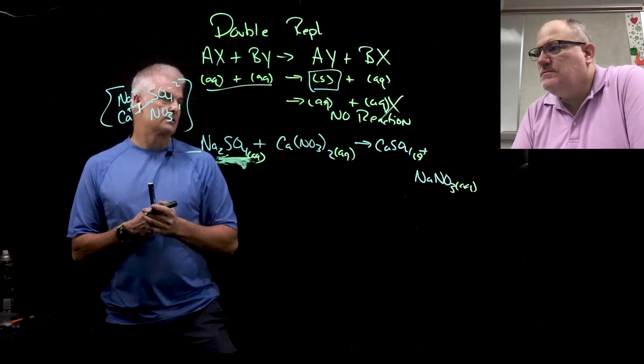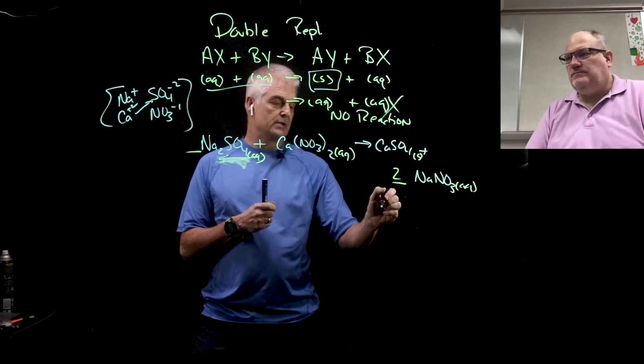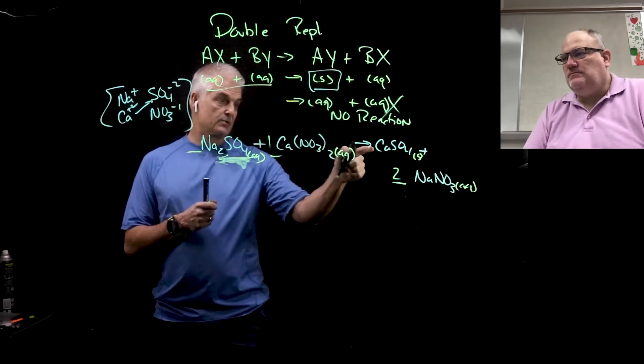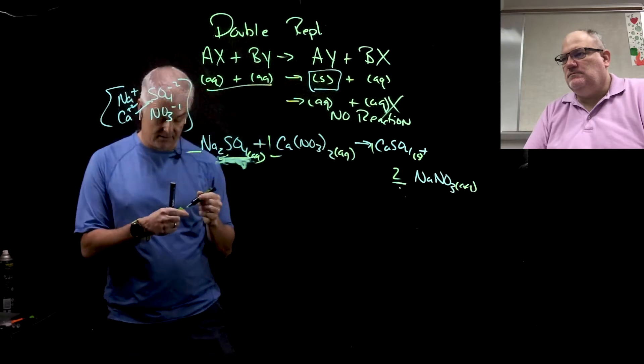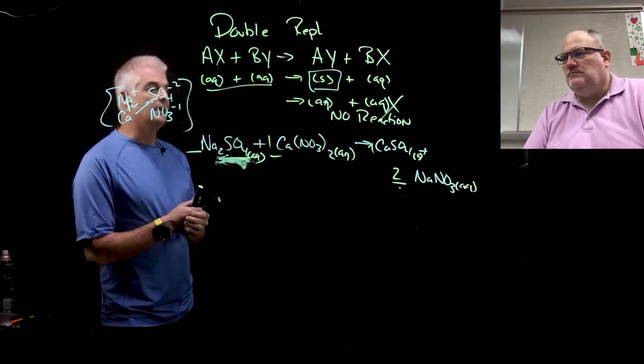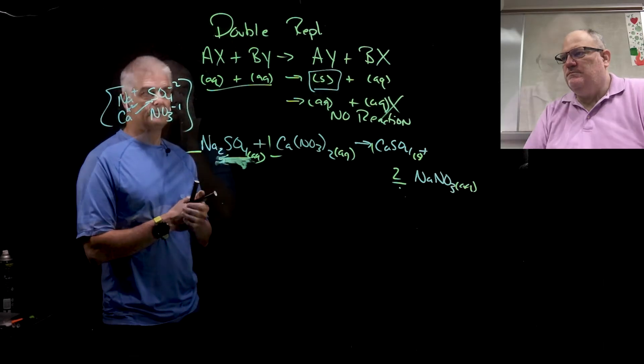Now we have to balance it. Sodium, I got two sodiums here, I got one sodium here, so I'm going to put 2 here. That gives me two nitrates. I have two nitrates, one calcium. That's it, that's the answer right there. Just put a 2 in front of the sodium nitrate, but don't forget the s and the aq.